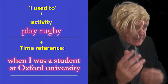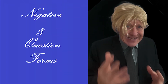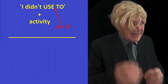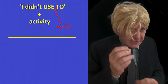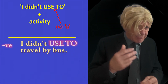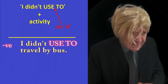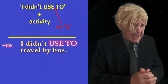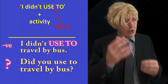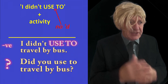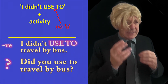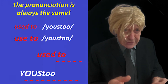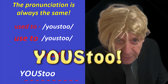We also need to pay attention to the negative and question forms. You will notice, with the spelling, the D is dropped when 'did' is used. For example, in a negative sentence: I didn't use to travel by bus. And in the question form: did you use to travel by bus? It's just the spelling, but not the pronunciation, that changes. It's always 'used to,' 'used to,' 'used to.' Now let's look at 'get used to.'